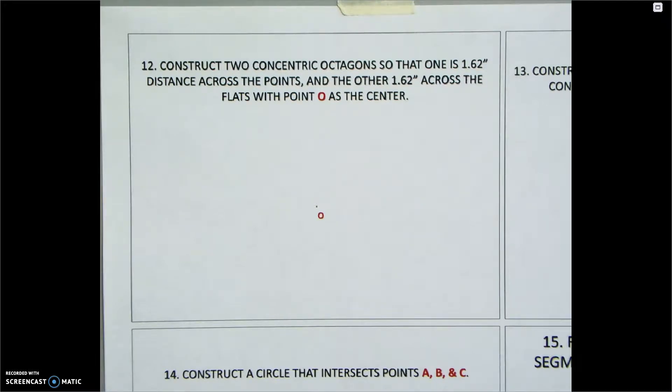So in order to do any sort of polygon like this, where you're given a distance across the flats or points, you always start with a circle. In this case, for both of them, it's the same circle.